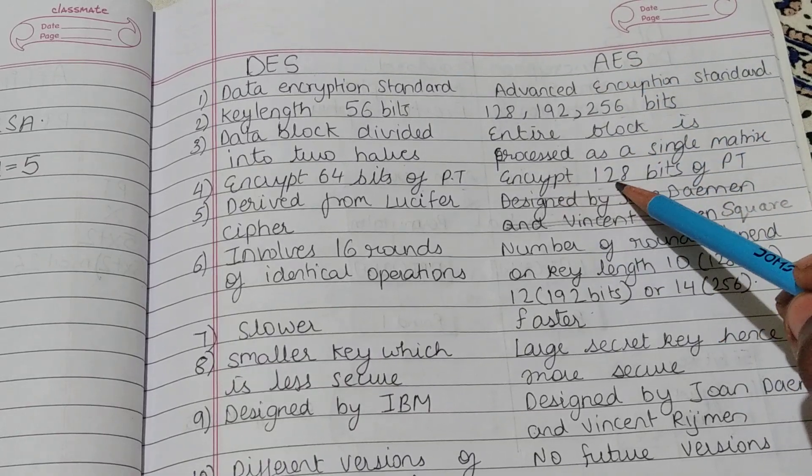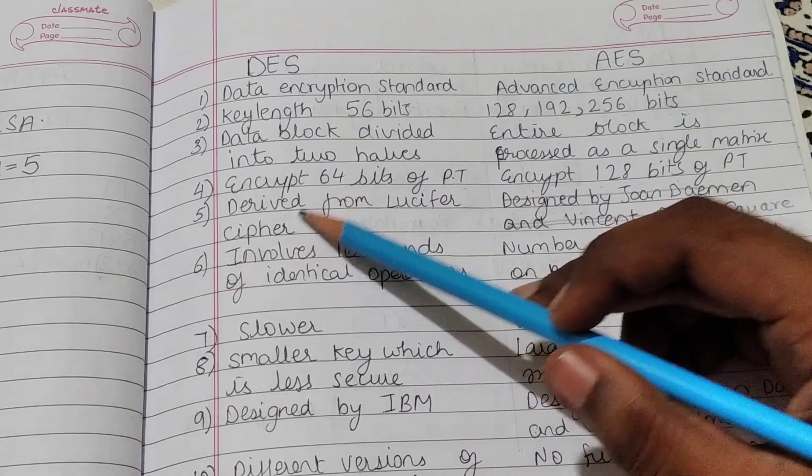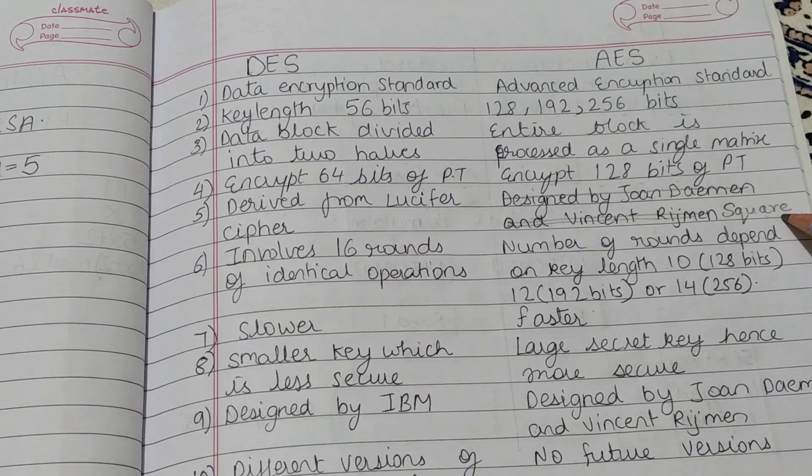DES is derived from Lucifer Cipher, but AES is derived from Square Cipher.